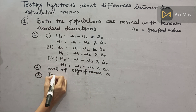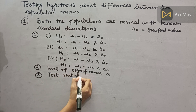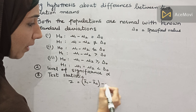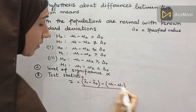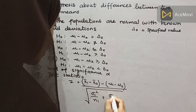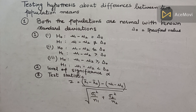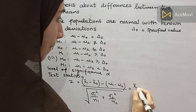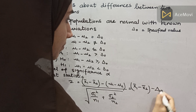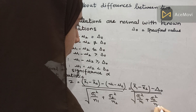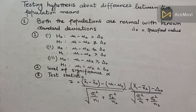The third step is the test statistic. For a normal population, z equals x-bar1 minus x-bar2 minus (mu1 minus mu2), divided by the square root of sigma1-squared over n1 plus sigma2-squared over n2. If we have a value of mu1 minus mu2, we can substitute it accordingly. This represents the difference between two means.